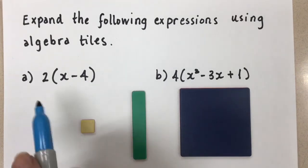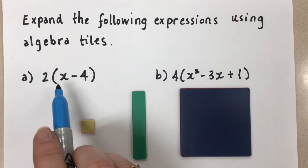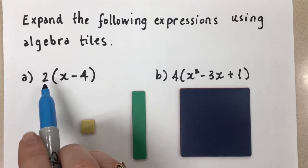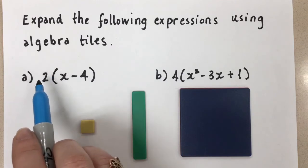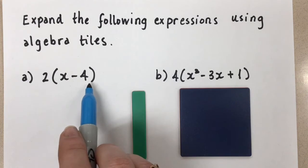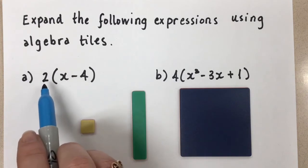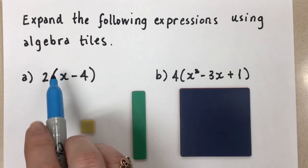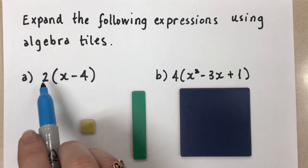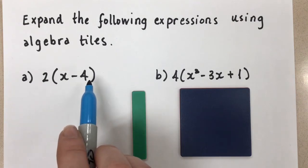In our first question, we have 2 times x minus 4. So when we look at this, the 2 here is the constant that we're going to multiply with everything inside of the brackets that's attached to the 2. So you have a 2, there's an open bracket there. When there's no operator there, it means multiplication. We're going to multiply with everything inside of the brackets until that bracket is closed.